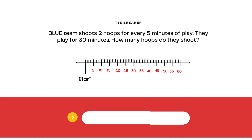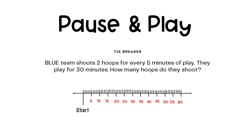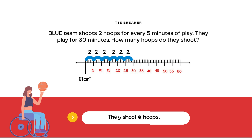Tiebreaker — go into overtime. Blue team shoots 2 hoops for every 5 minutes of play. They play for 30 minutes. How many hoops do they shoot? Pause here and press play when you have your answer ready. Answer: They shoot 6 hoops.